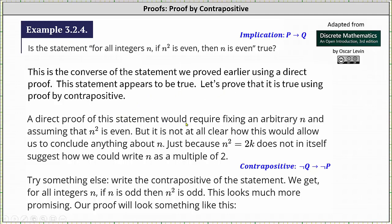A direct proof of this statement would require fixing an arbitrary n and assuming that n² is even. But it is not at all clear how this would allow us to conclude anything about n. Just because n² = 2k does not in itself suggest how we could write n as a multiple of 2.